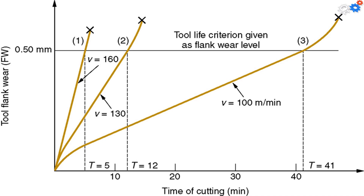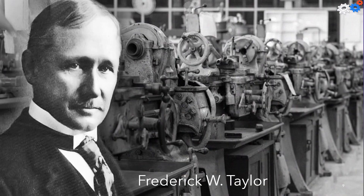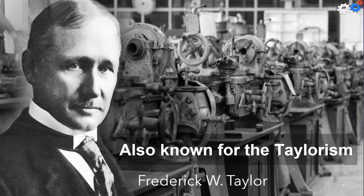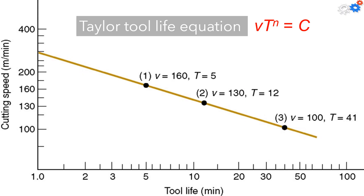If tool wear curves are plotted for several different cutting speeds, as cutting speed increases the wear rate increases, so the same level of wear is reached in less time. The relationship between tool life and cutting speed is credited to Frederick W. Taylor, also known for Taylorism. Taylor used a natural log-to-log plot of cutting speed versus tool life to present what is known as the Taylor tool life equation.